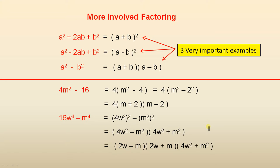More involved factoring. I'd like you to look at these three very important examples which we have seen in earlier videos. a² plus 2ab plus b² is (a + b)². a² minus 2ab plus b² is (a - b)². And a² minus b² is (a + b)(a - b).